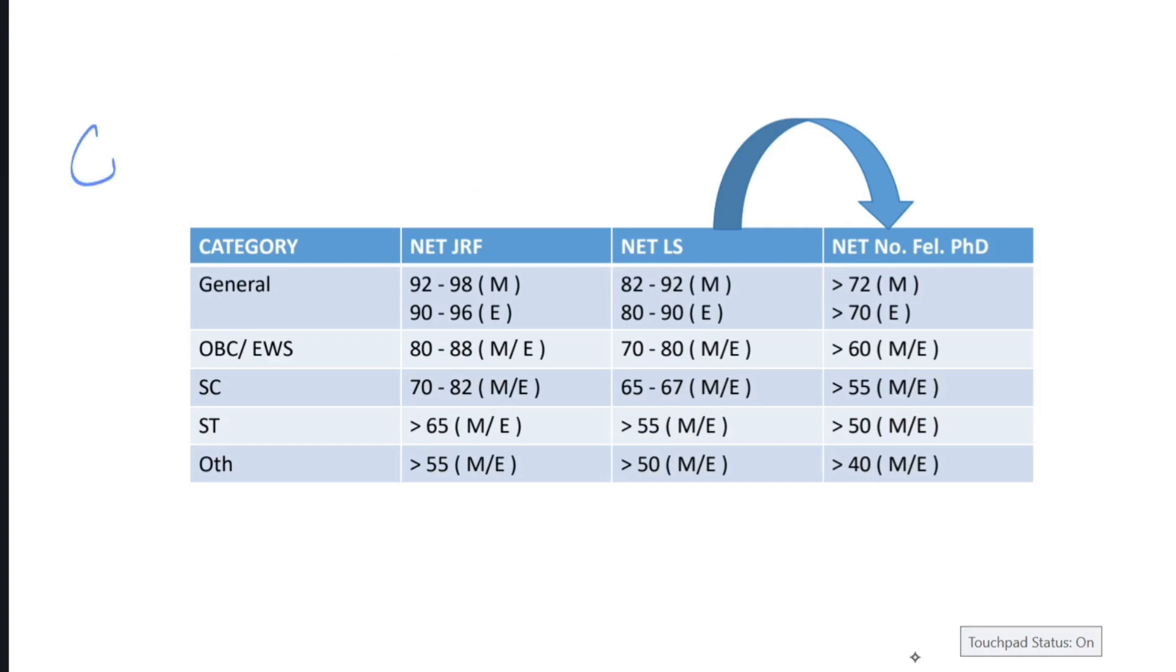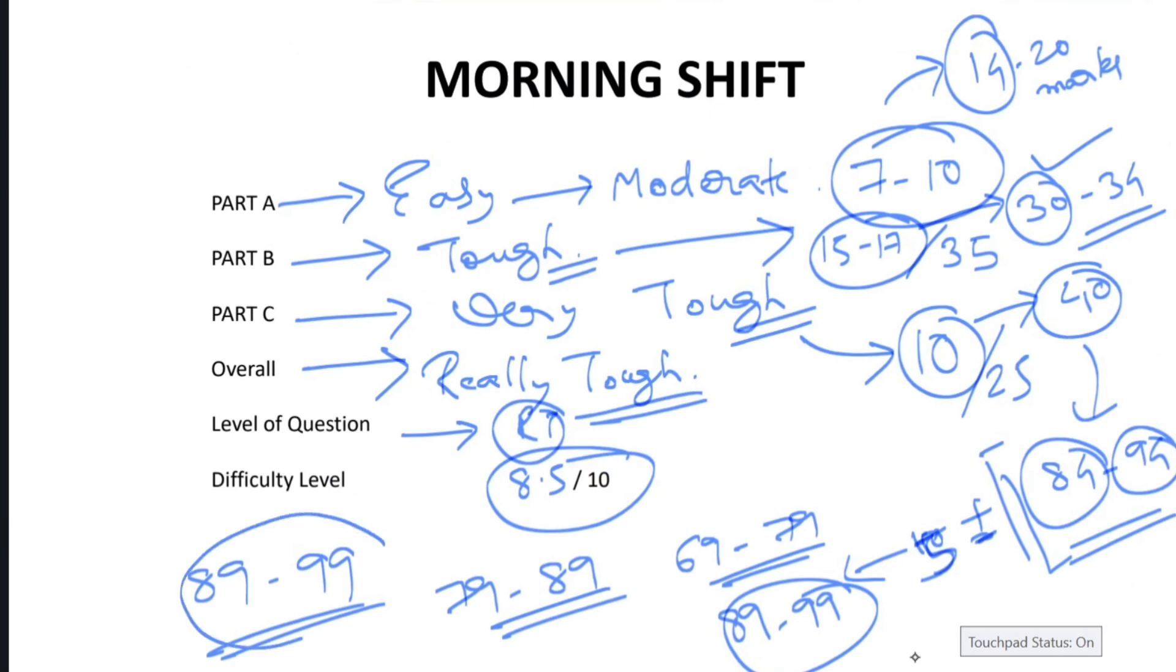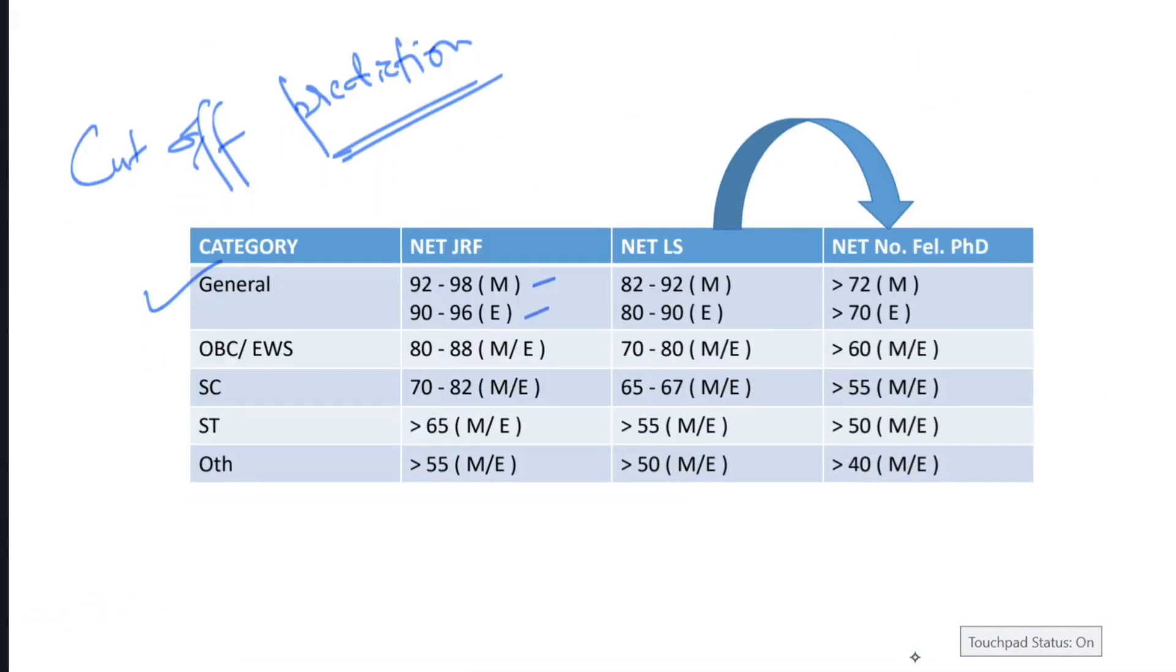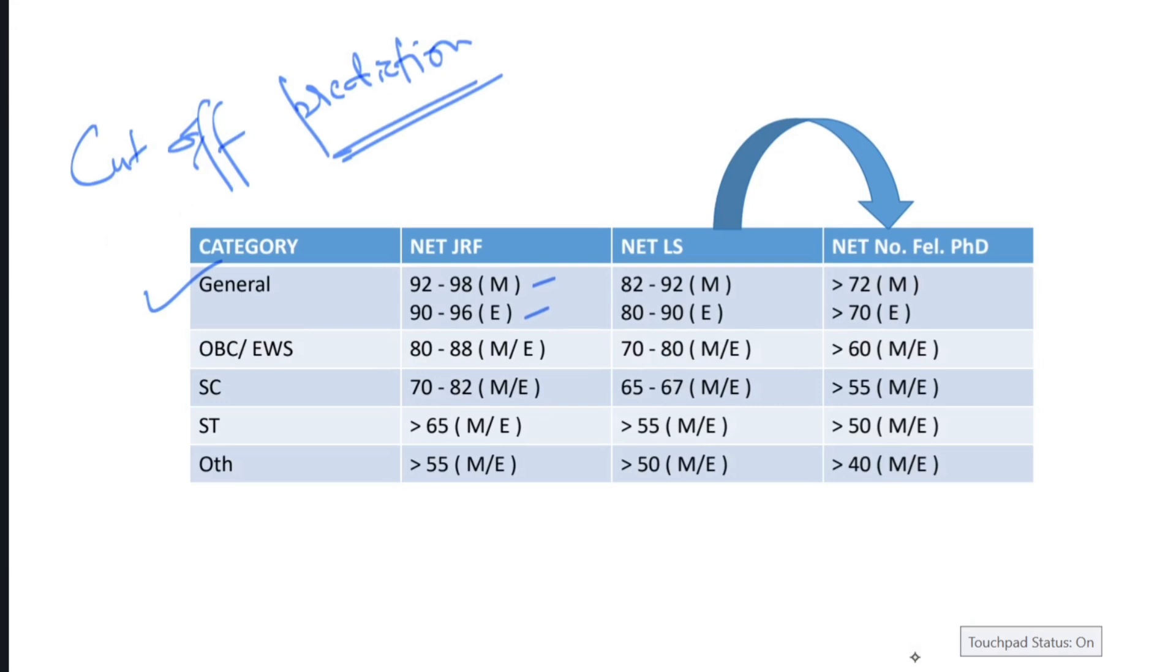Now, what is the scientific prediction of our TABS Life Science? This is the exact cut-off prediction predicted by the experts. For general category, the cut-off has been predicted for morning shift to be around 92 to 98, and for evening shift to be around 90 to 96. What I predicted for morning shift was 89 to 99, and for evening shift was 91 to 97, almost the same. The median value for the cut-off for general category for both shifts can be around 95. If you're getting more than 95 marks, you can be sure this is the JRF value.